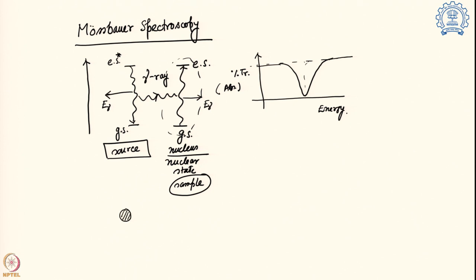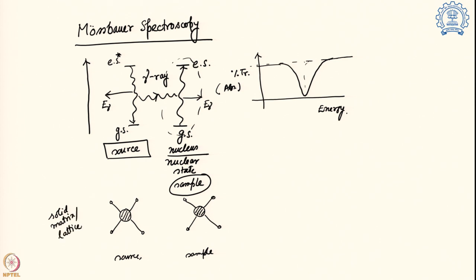That is why the source is made into a static system. Similarly the sample is placed in a static condition — specifically in the form of a solid matrix or in a lattice condition — and by doing that, the momentum-based recoil is eliminated. This produces a recoilless condition, and at that particular condition there is a very good chance of achieving resonance.